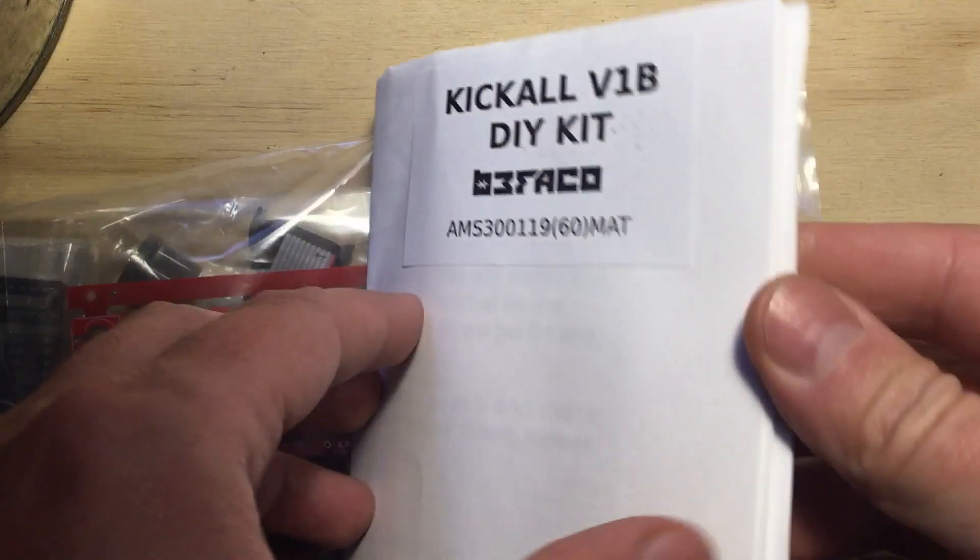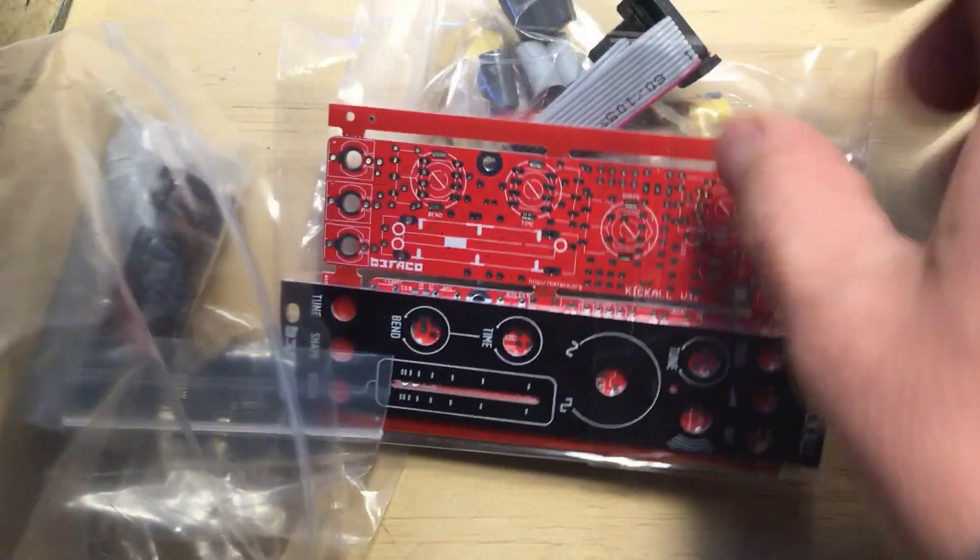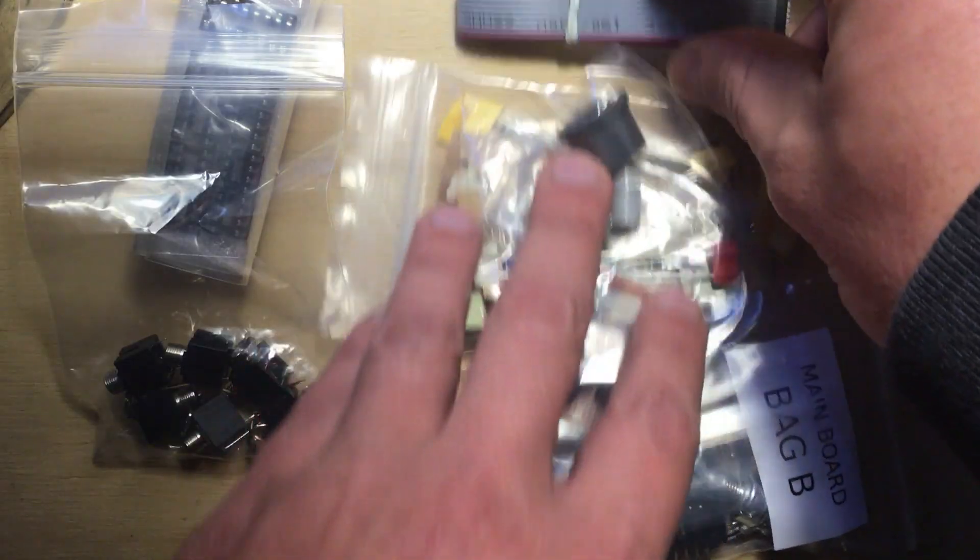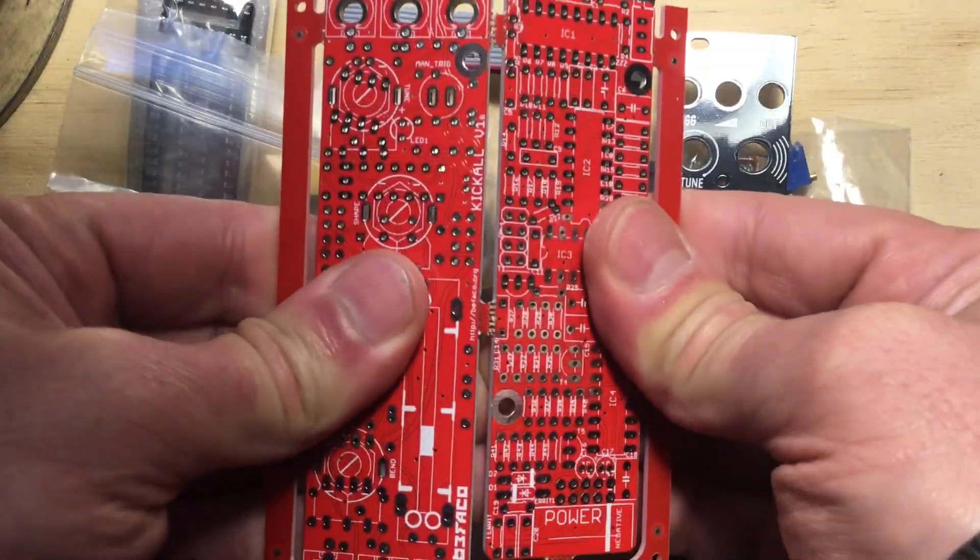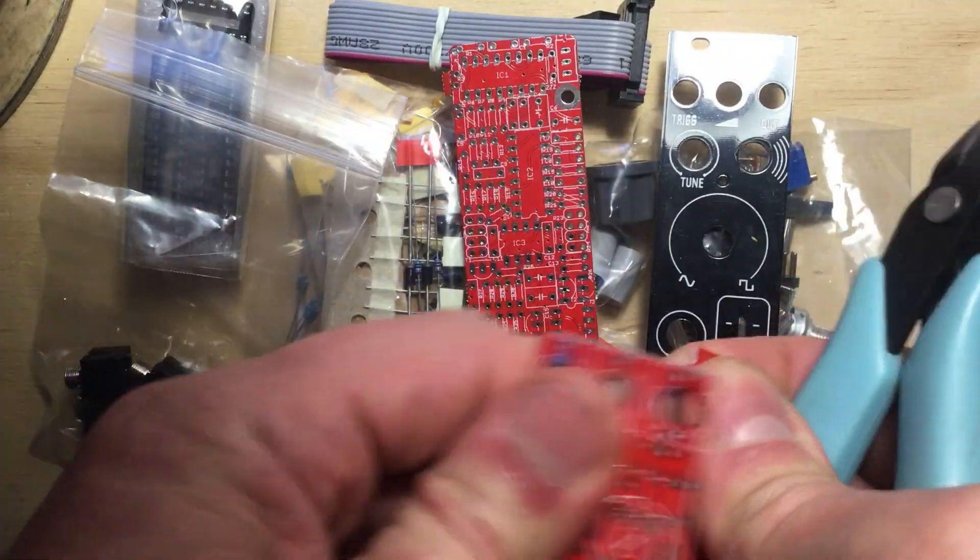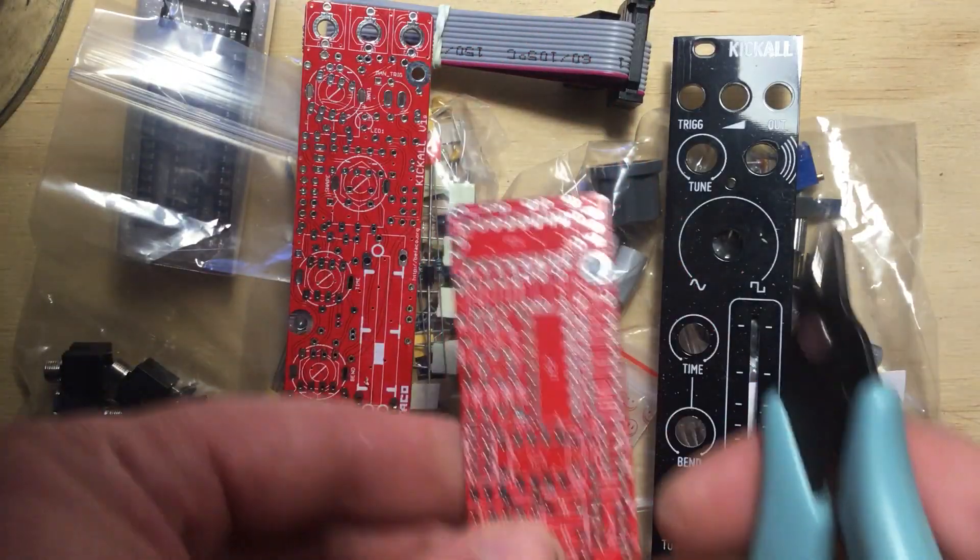In the box you get a printed build manual which I suggest you follow closely as well as every electronic and hardware component needed to build the module including a power cable and knurls for mounting, a nice black panel and both PCBs. This time the PCBs came stuck together so I had to break them apart first. Easy peasy.